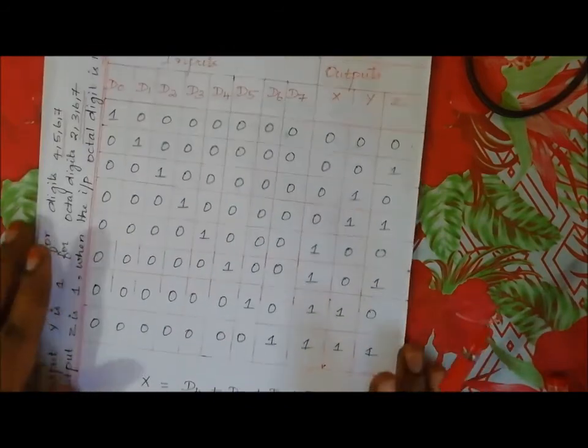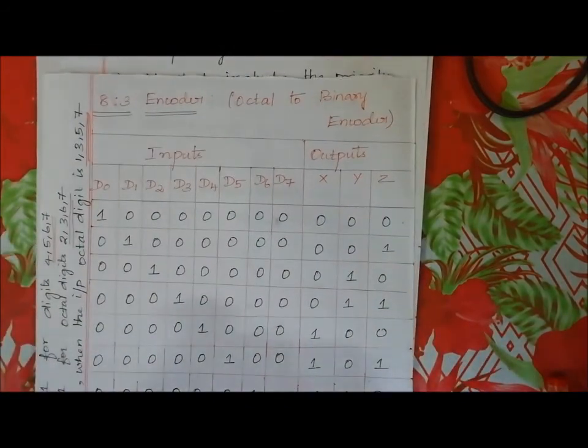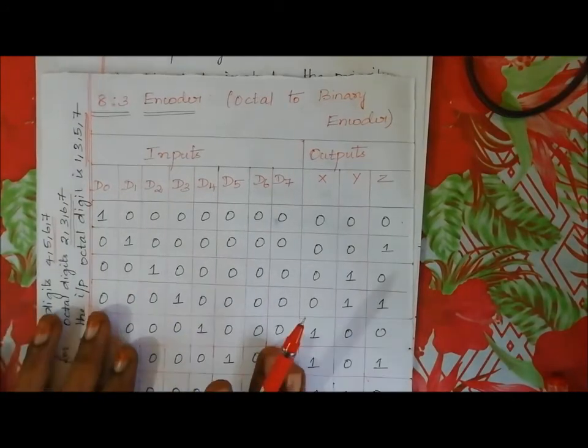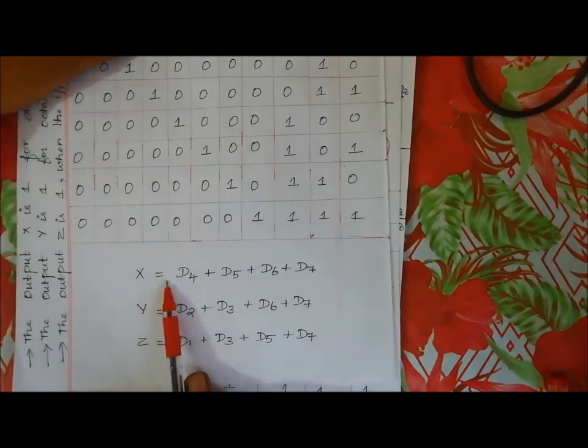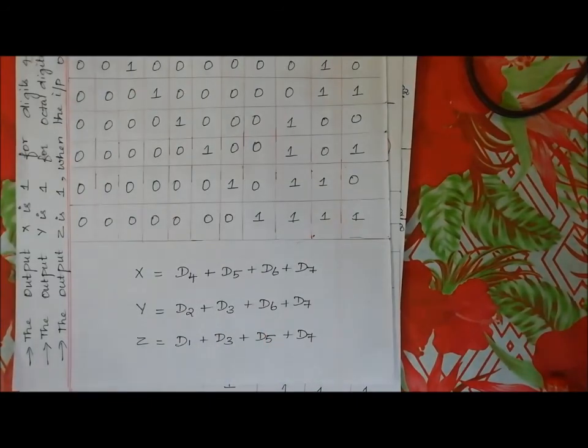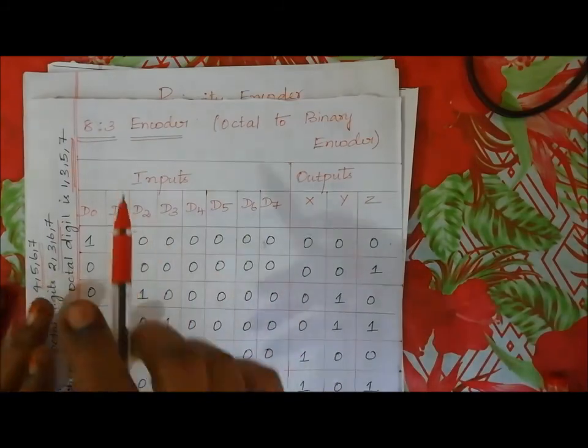So this is how we derive the 8-to-3 encoder. Similarly, the same procedure applies for a 4-to-2 encoder or a 16-to-4 encoder. The steps are: define input variables, construct the truth table, and derive the Boolean expressions. This is how you implement the 8-to-3 encoder.